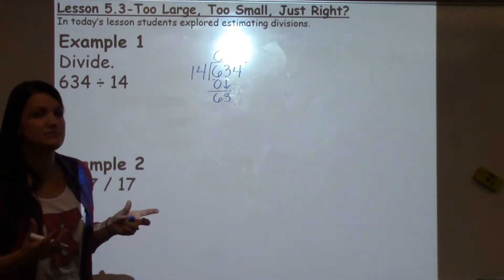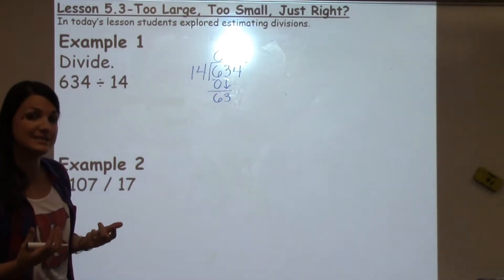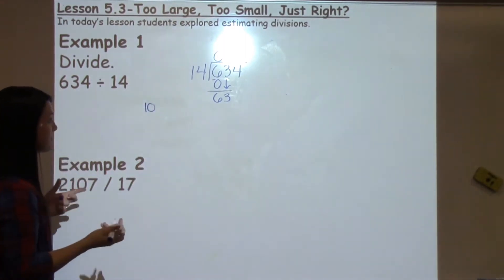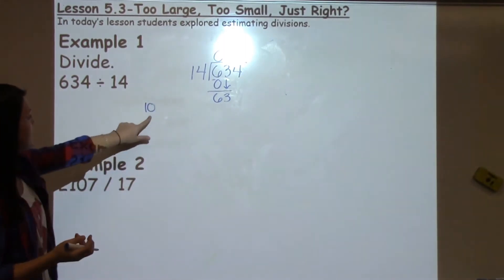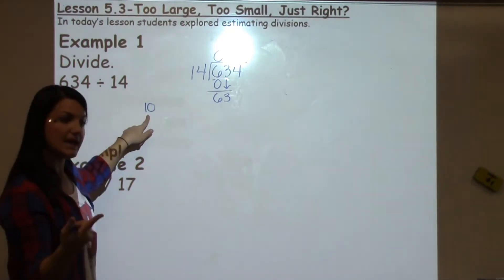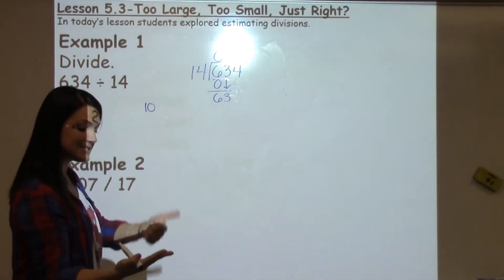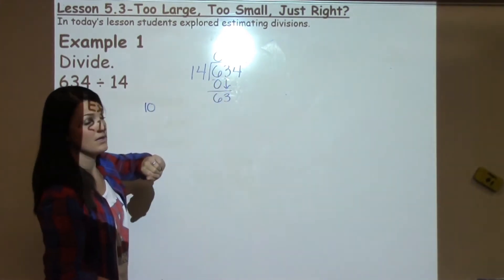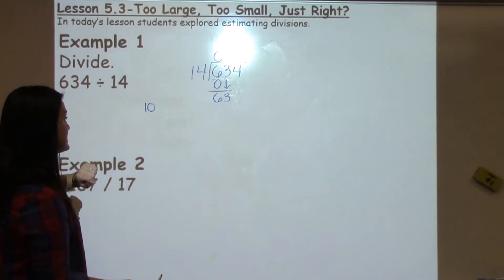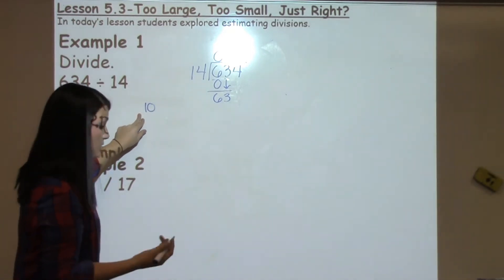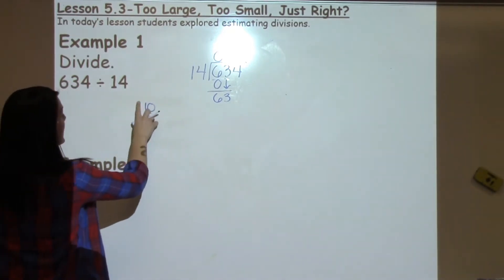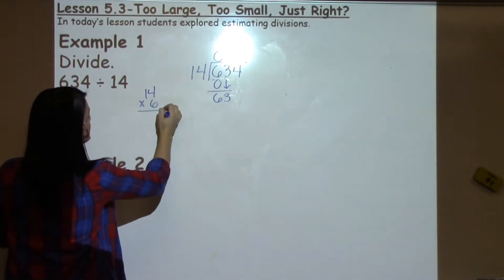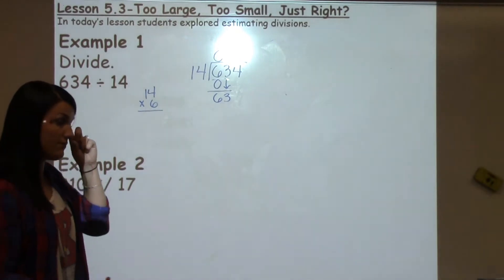We ask students to estimate in their head what is an easy number to work with that's close to 14. Many students think of 10. Counting by 10s: 10, 20, 30, 40, 50, 60 — so 10 times 6 gets really close to 63, because 10 times 6 is 60. Students might want to start trying 14 times 6 to see if that gets them pretty close to what they're looking for.